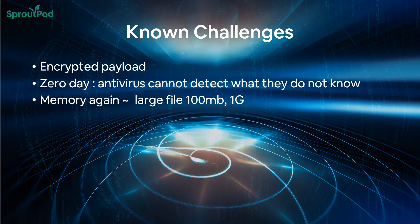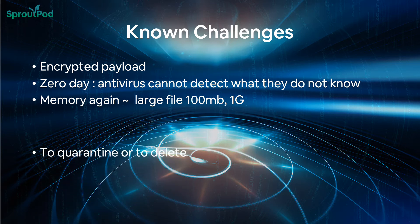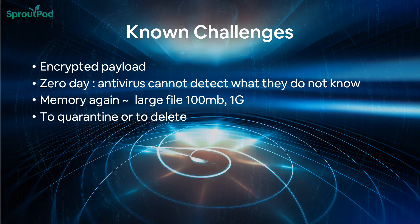System memory is a finite resource. When a file is very large — like 100 megabytes or a gigabyte, such as media files — antivirus has trouble detecting any malware that might be embedded inside those files. Most antivirus memory buffer defaults are 2 megabytes to 10 megabytes.